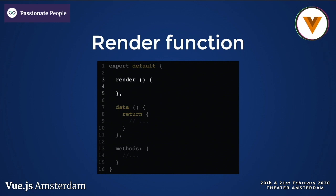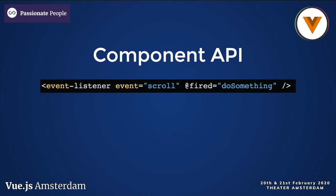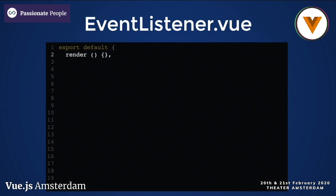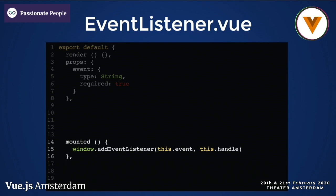I want a component with an API like this: we can give it an event, and whenever that event is fired, we can invoke a method. So when the user scrolls, the 'do something' method will be invoked. We start by creating our component and making it renderless by giving it an empty render function. We need a prop for the event — nothing fancy, just a string, required. And then in the mounted lifecycle hook, we add our event listener to the window object.